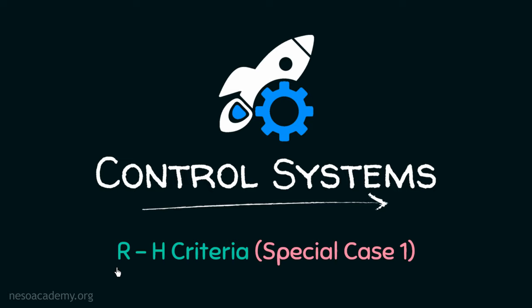In the previous lecture, we discussed the introduction to RH criteria, the method of forming Routh's array, and the necessary and sufficient conditions for the stability of a control system. Now, from this lecture, we are going to discuss some special cases of RH criteria, and in this particular presentation, we are going to discuss Special Case 1 of RH criteria.